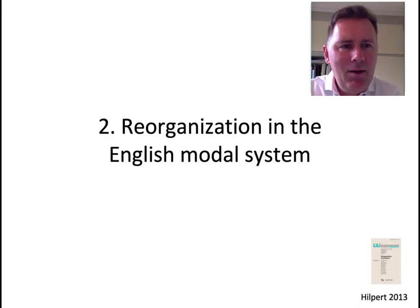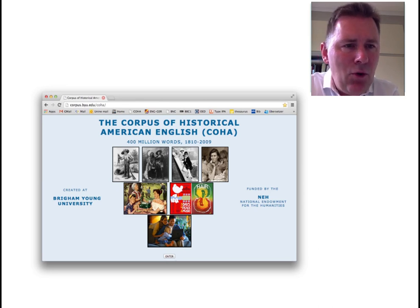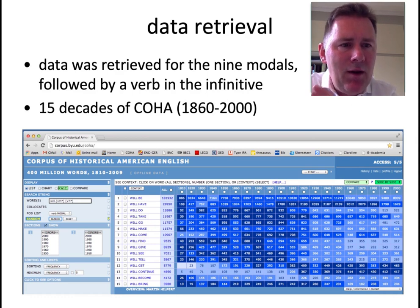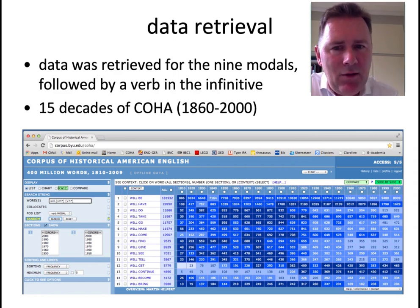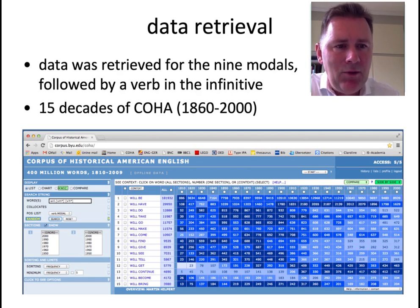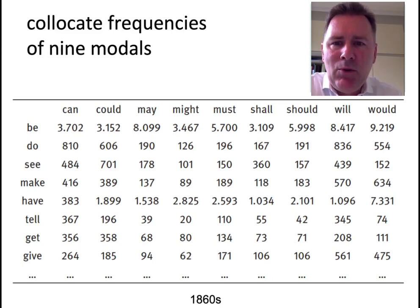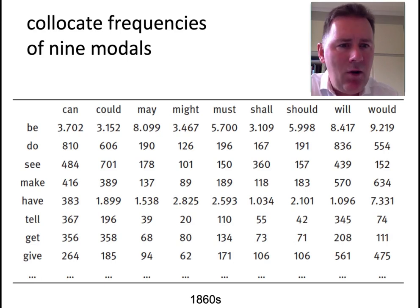In this study, I'll be looking at associations between constructions and their collocates on a more systemic level, using the Corpus of Historical American English — a corpus of different written genres spanning some 200 years, divided into decades. I retrieved data for the nine core English modals followed by a verb in the infinitive, restricting the study to 15 decades starting with the 1860s and ending with the 2000s. The data is organized in tabular format, with the nine modals — can, could, may, might, must, shall, should, will, and would — in columns, and frequencies of lexical verbs that collocate with them in the rows.